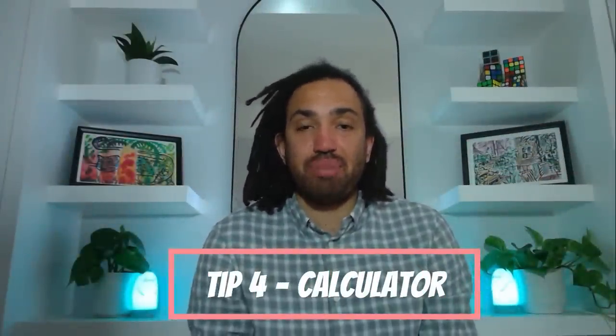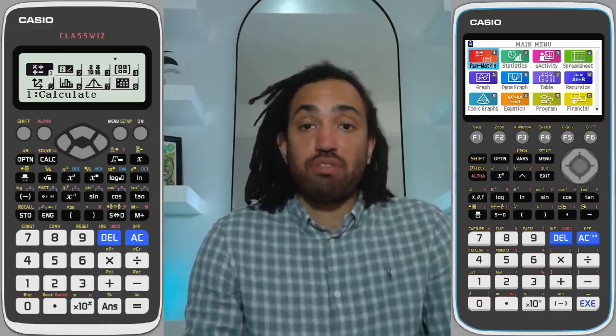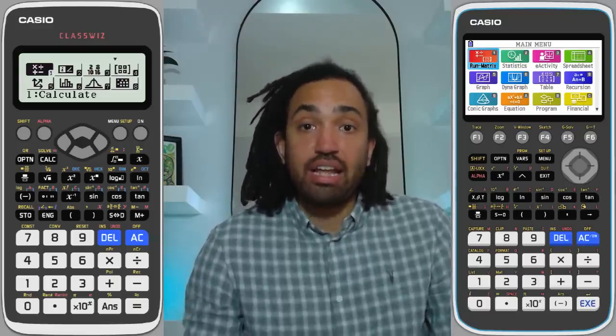Tip number four and that is knowing your calculator and being efficient with it. The two calculators that I recommend are the CG50 and the Casio ClassWiz. I have a video which I will link here that goes through all you need to know about using those two calculators for statistics and how you can become efficient and quick at getting the values which are going to need to solve the questions in your statistics A level.